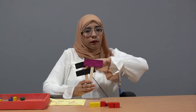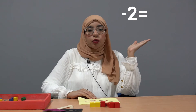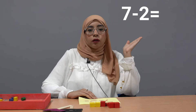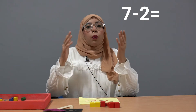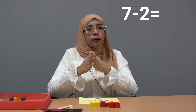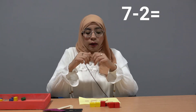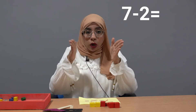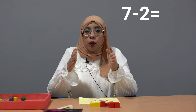Now let's see how we can answer a subtraction equation. If I have seven minus two equals — how can I answer it? First, find the smaller number. Which one is the smaller number, KG — seven or two? Excellent! Two is the smaller number.